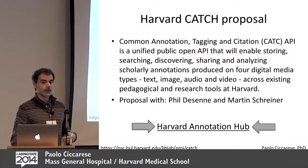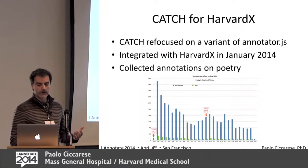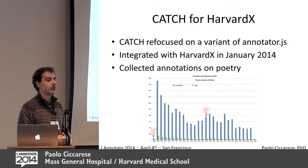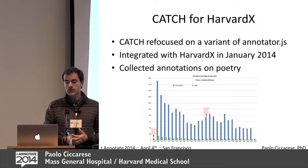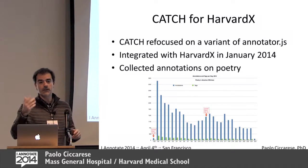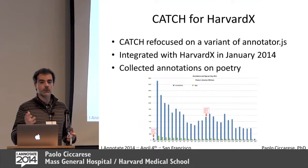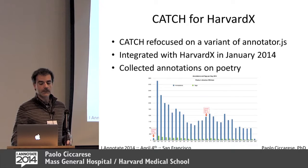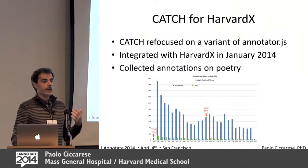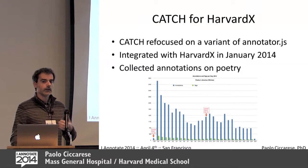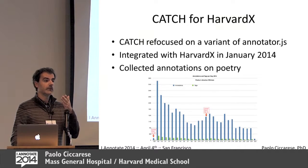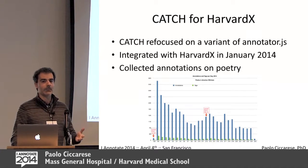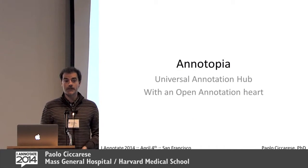Phil moved to HarvardX and we started to focus on HarvardX. Basically in HarvardX we use a derived Annotator.js client with a lot of features, using a backend that is now called Annotopia. It's interesting because we have a backend they can use, and other folks can use the same backend — they can focus on their primary business, which is making the users happy, which is a really hard task.